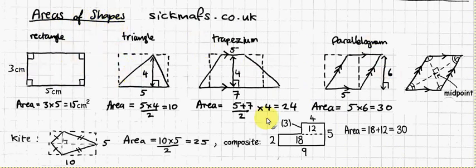So like rectangles, triangles, trapeziums, parallelograms, kites, and composite shapes, which are shapes made up of different shapes like rectangles and stuff. So let's start talking about area of a rectangle.